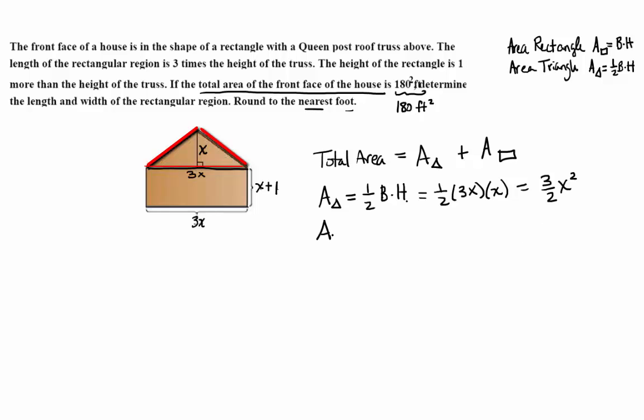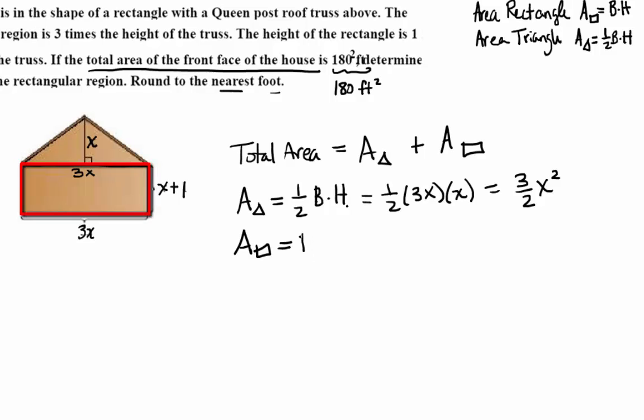Now the area of the rectangle. How are we going to find that? We need base times height. So what's the base? 3x. And the height? x plus 1. Good. Let's go ahead and distribute that. So that's 3x squared plus 3x.